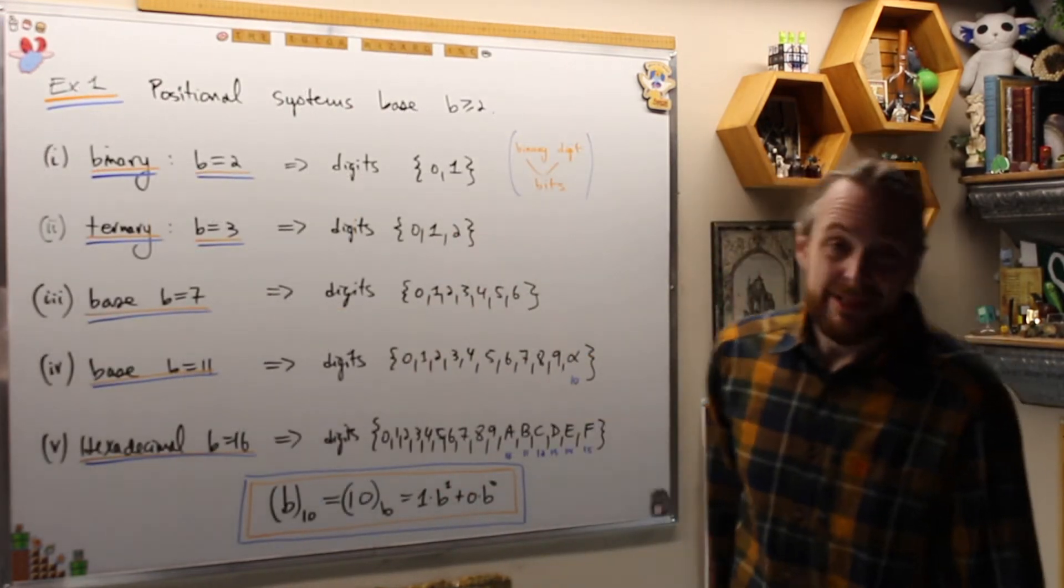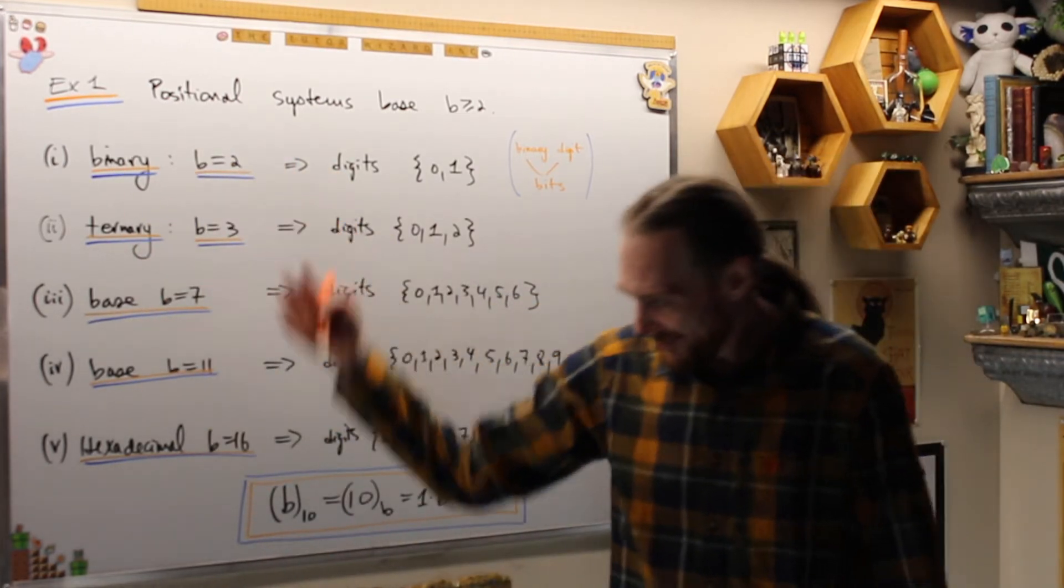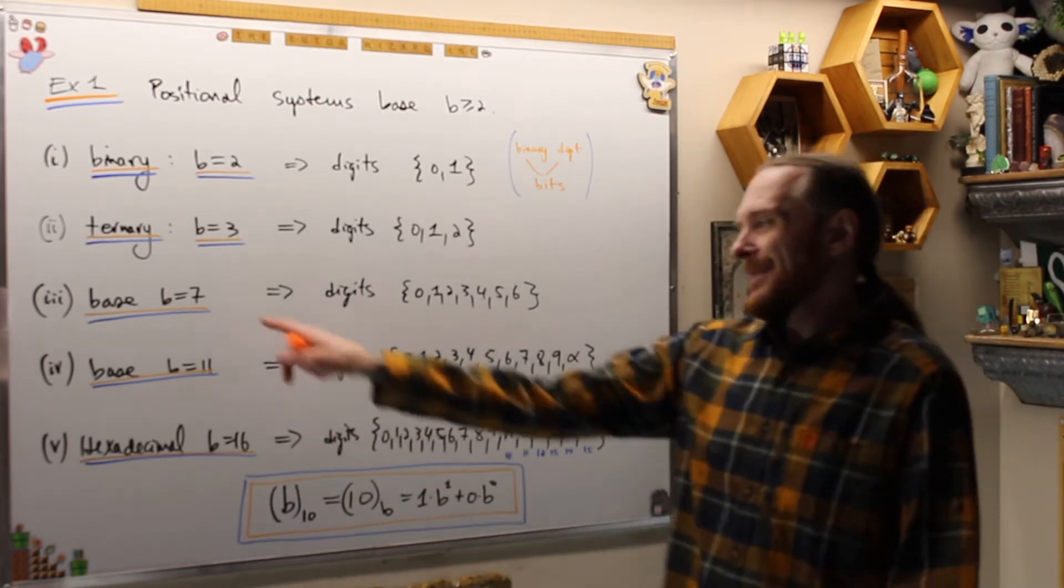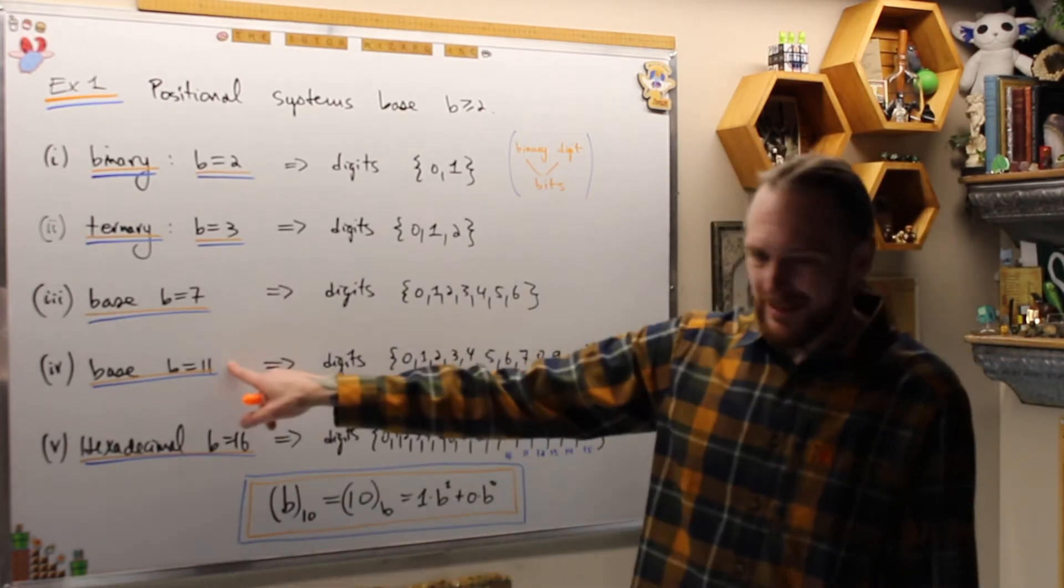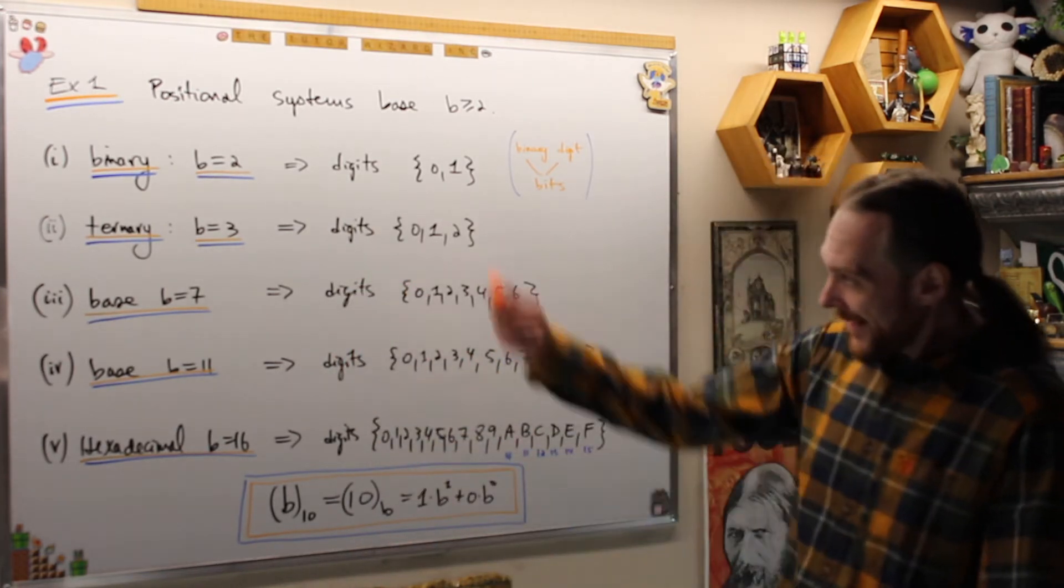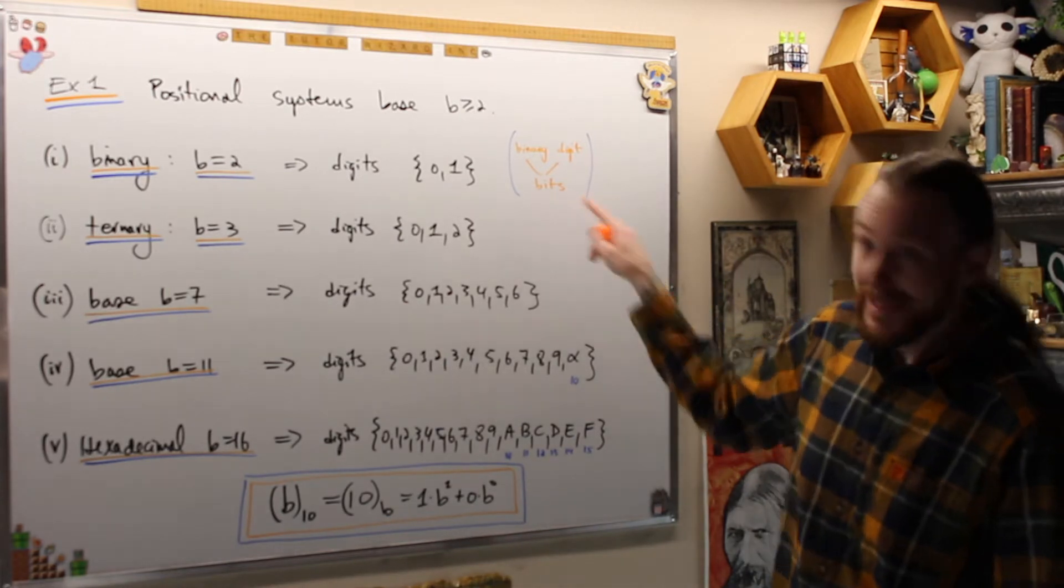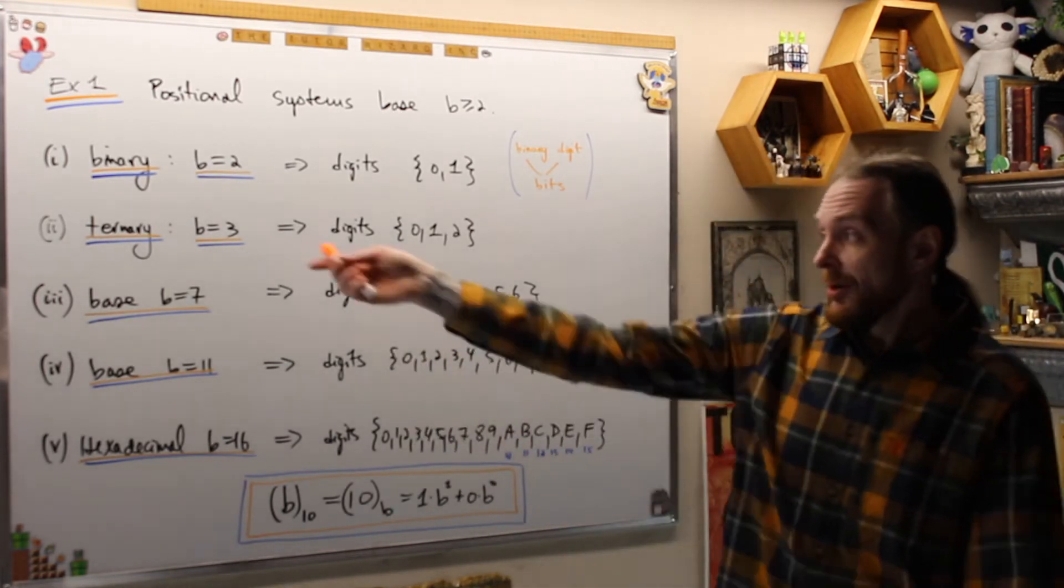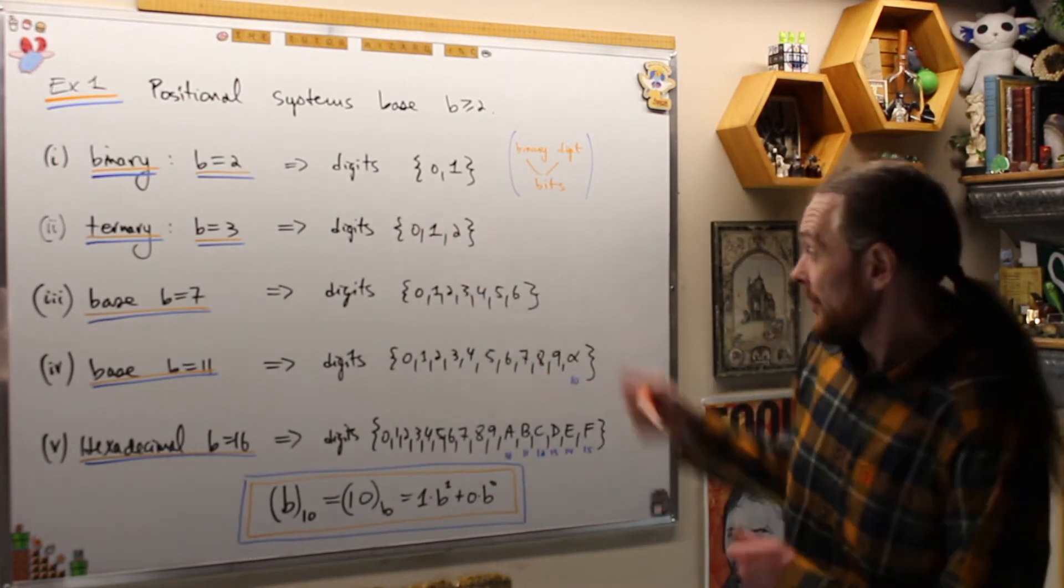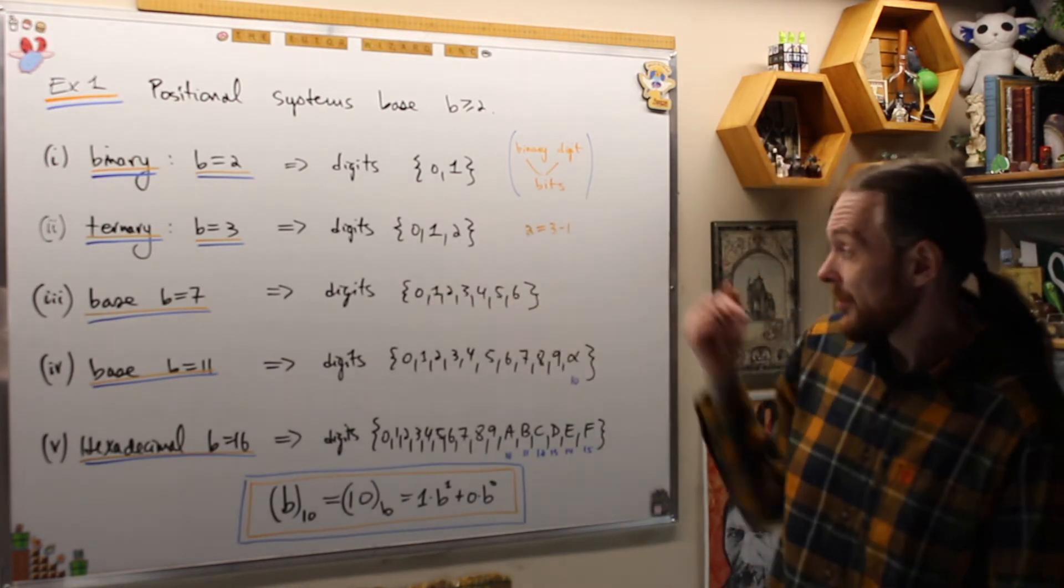Example one is positional systems base B. They have a fancy name for everyone but I'm not going to give them unless there are specific ones we talk about regularly. Base 7 is heptary and base 11 is onary, but you can just call it base 7 and base 11. Binary just has two digits, zeros and ones. Binary digit becomes bits. In ternary, base 3, we're going to use the digits 0, 1, 2 because 2 is 3 minus 1.